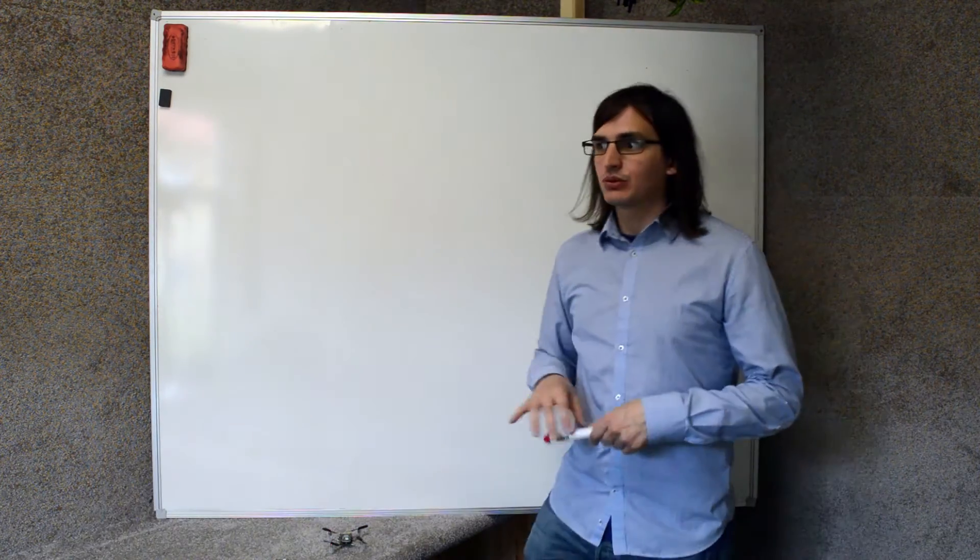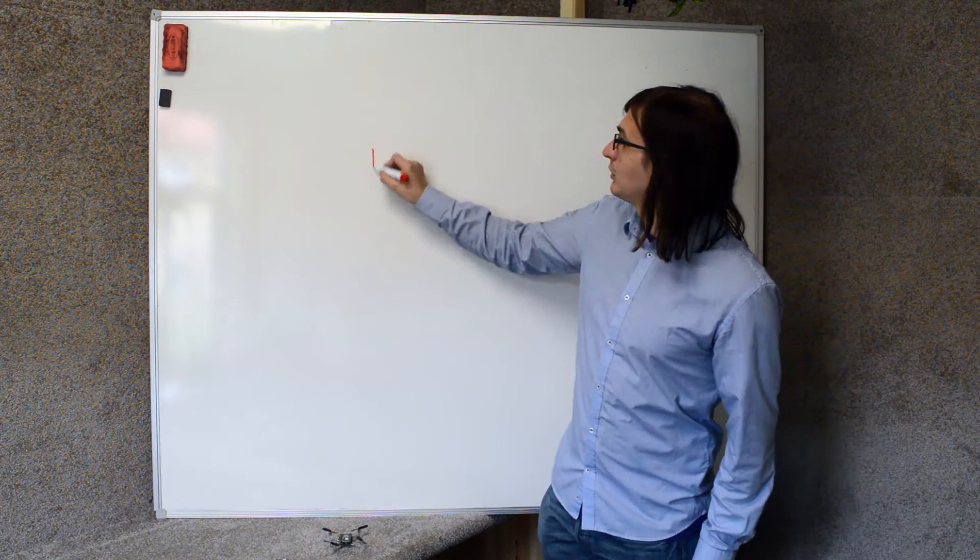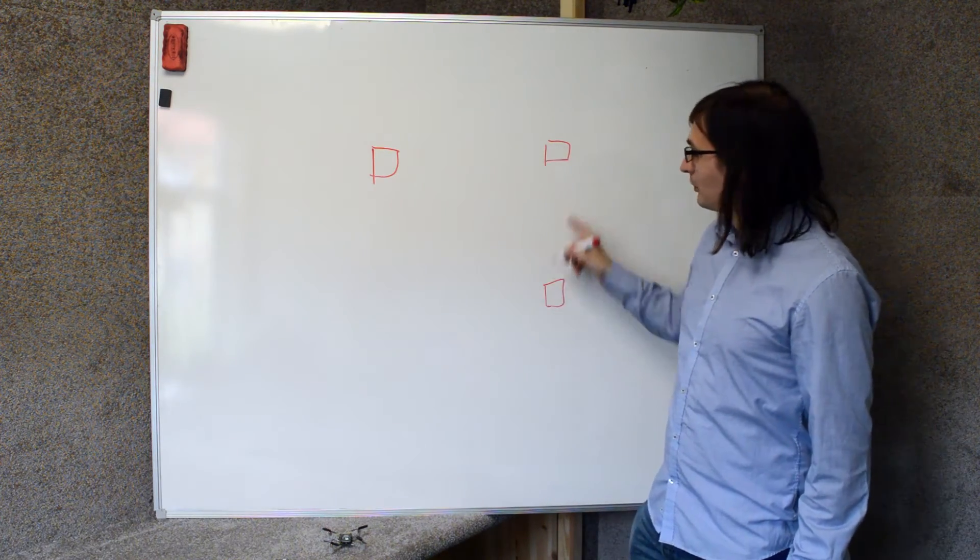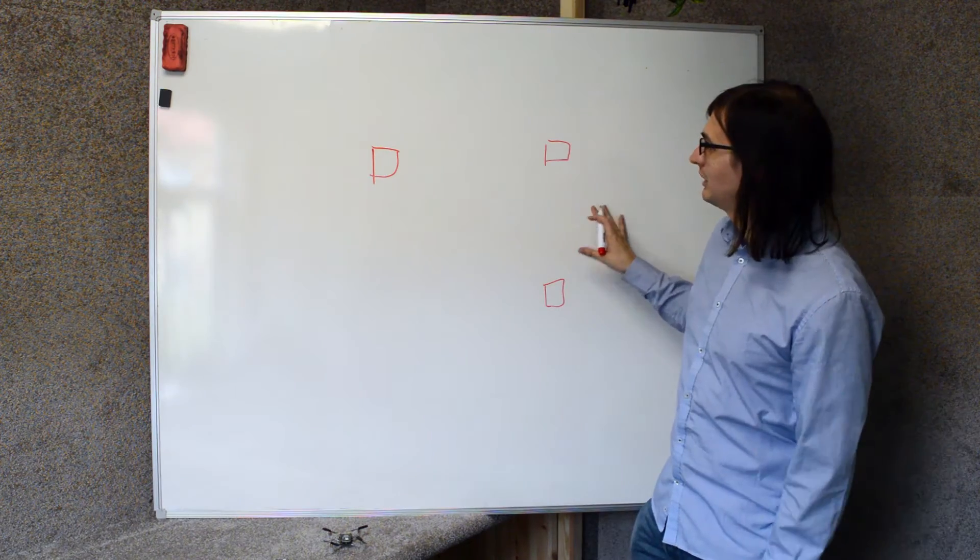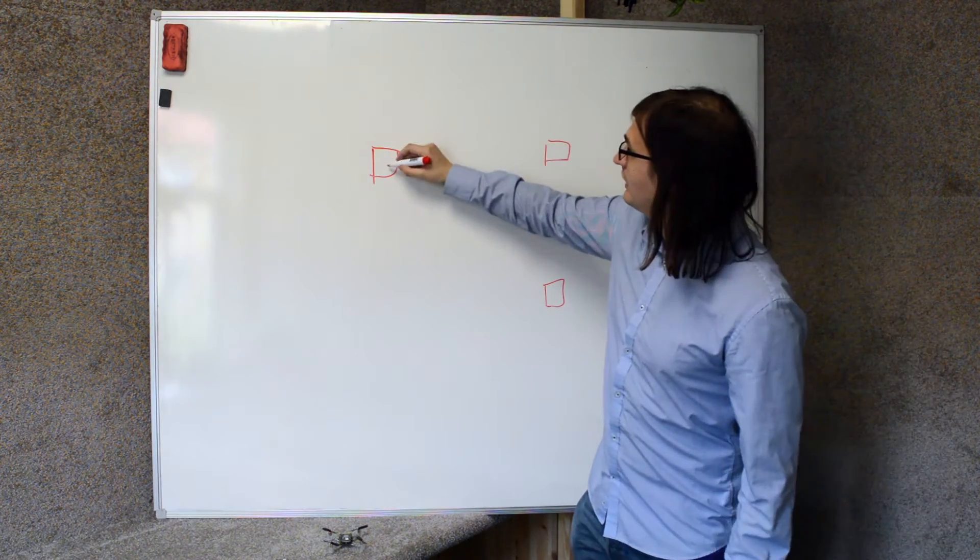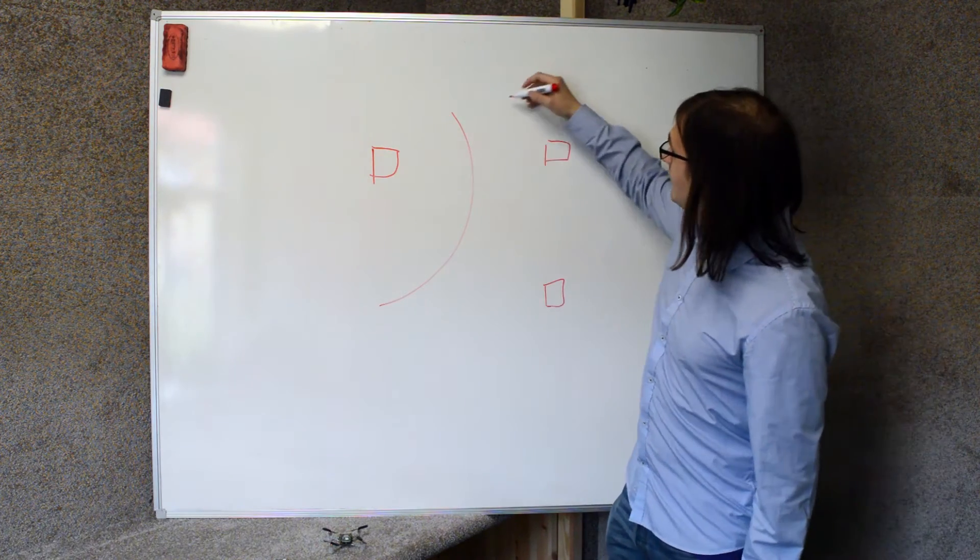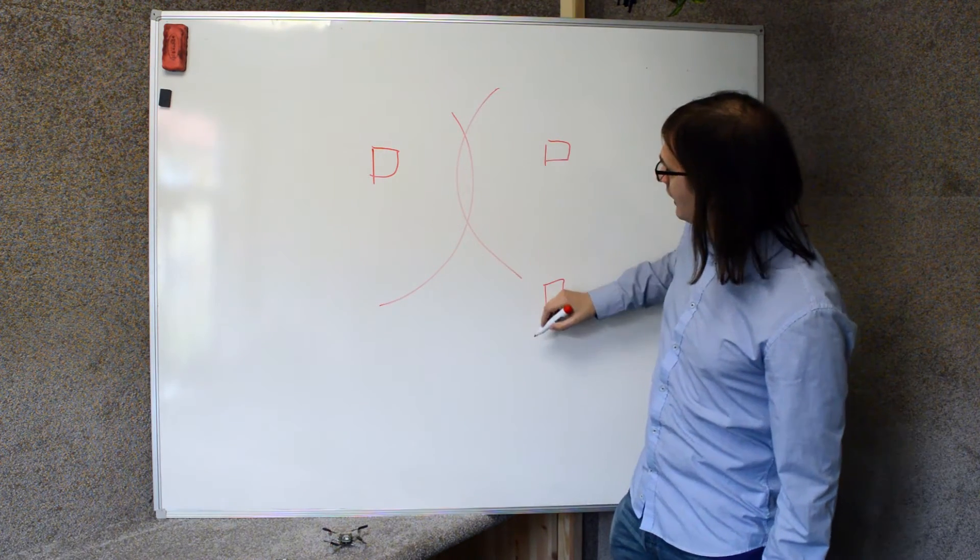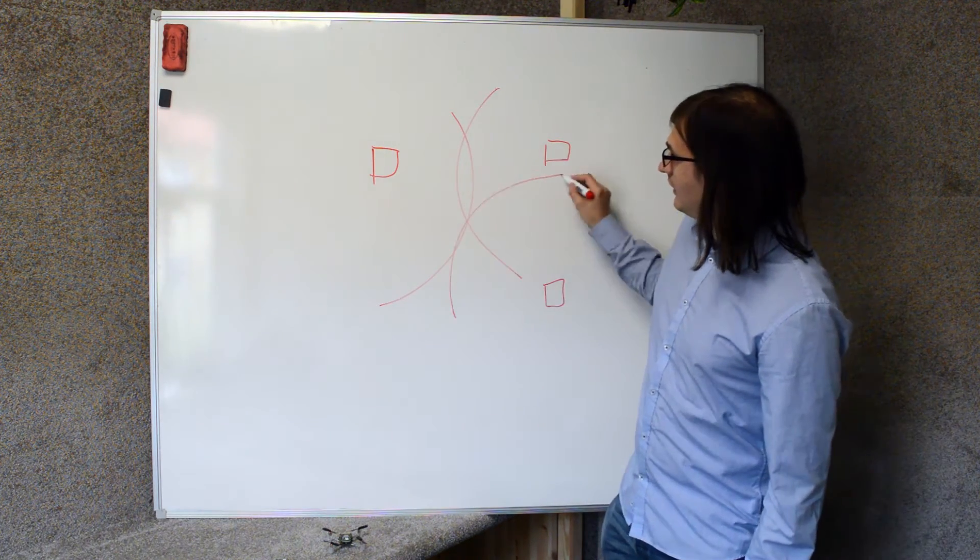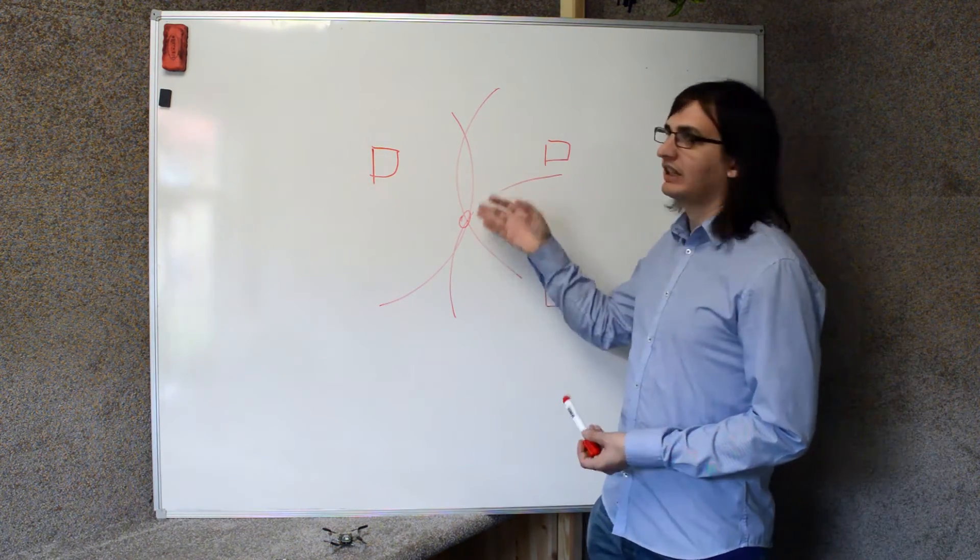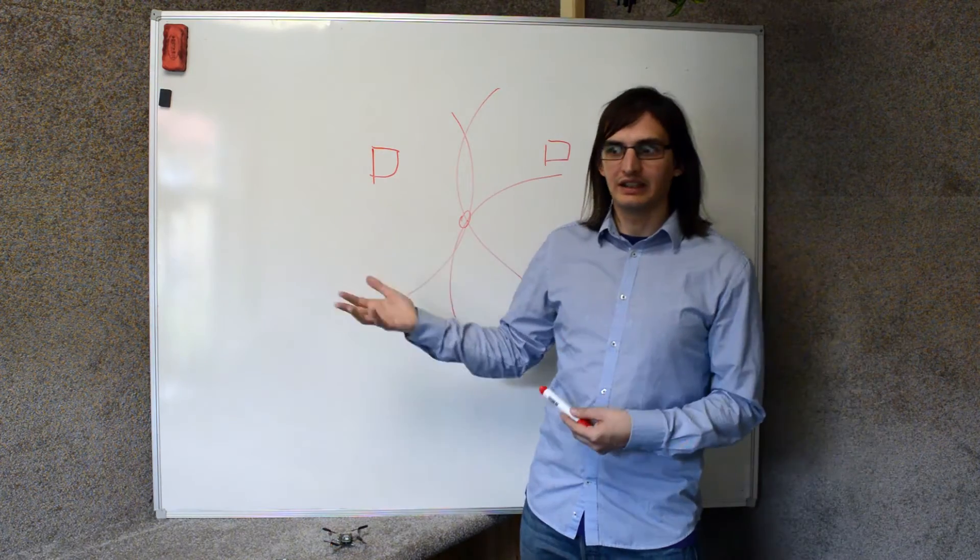And the way that it works is that we would place anchors, for example, three in a corner of the room, and by knowing the distance between the tag, so in that case the Crazyflie, and the different anchors, we can pinpoint the position of the Crazyflie. Knowing the position of the Crazyflie, we can fly the Crazyflie autonomously in the room.